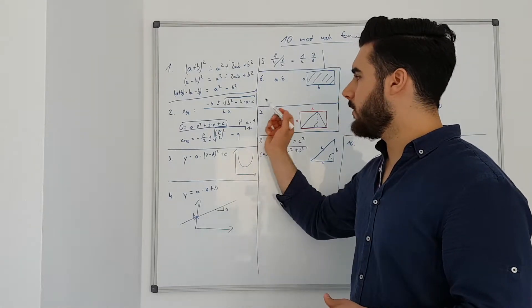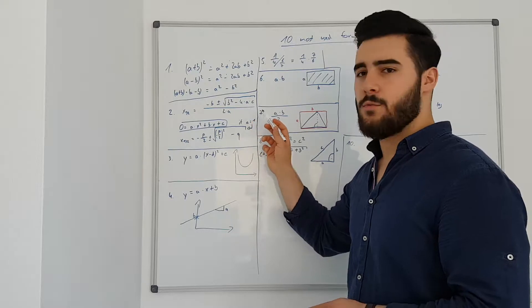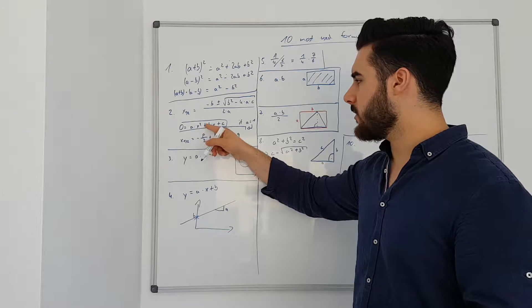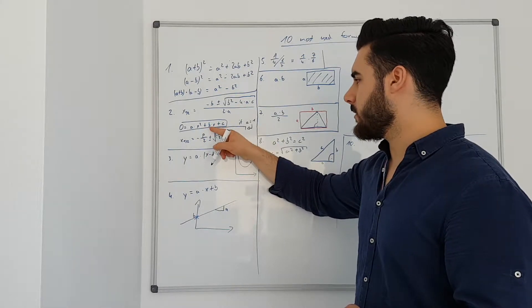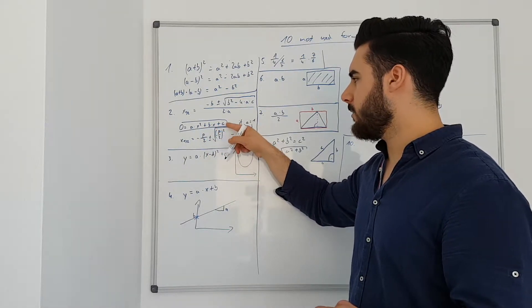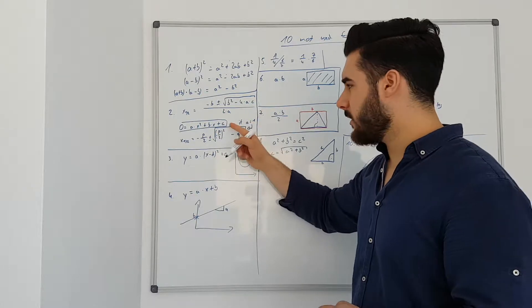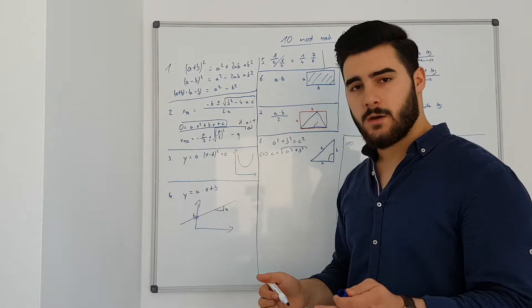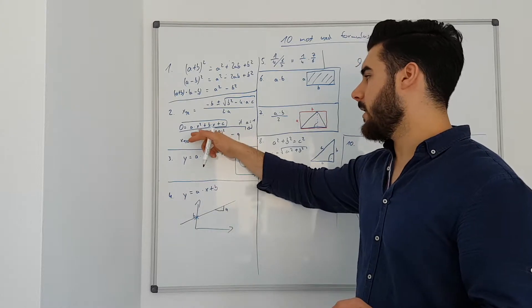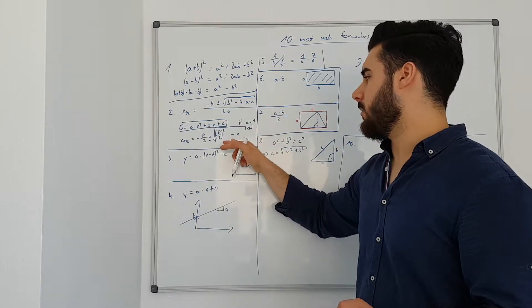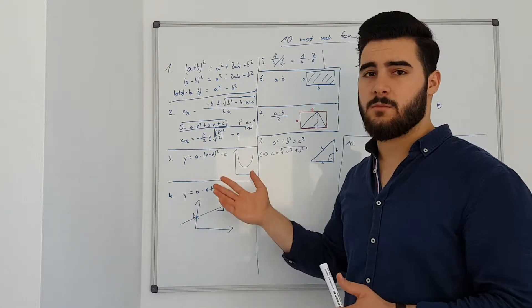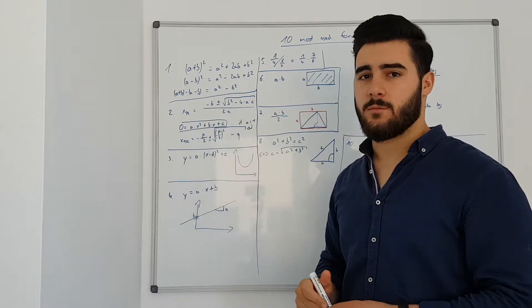When does the ABC formula work best? It's for formulas that look like this, a times x squared plus b times x plus c. So for quadratic equations that are equal to 0. But in cases where a is equal to 1, you can also use just the PQ formula, and this gives you the same result as the ABC formula.